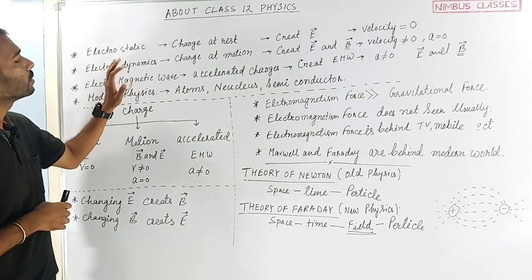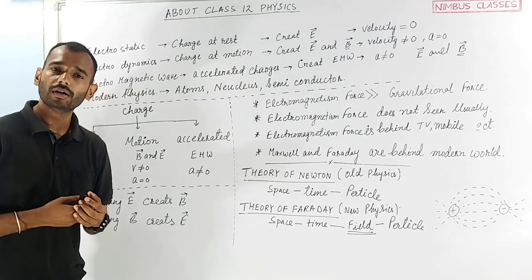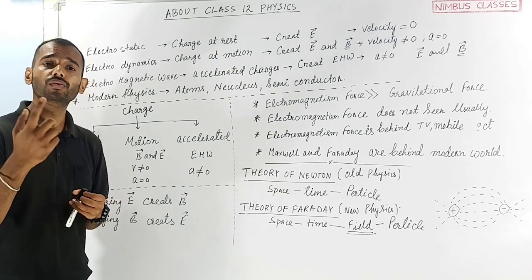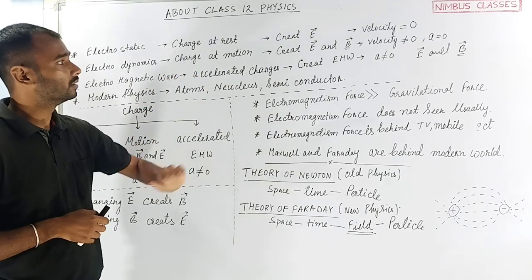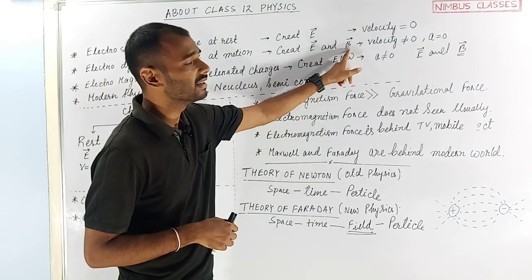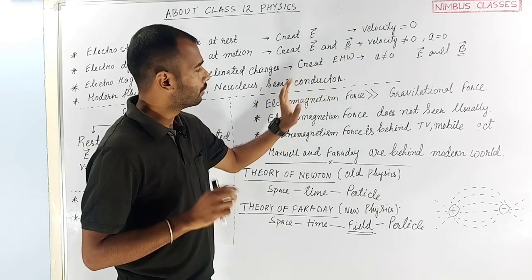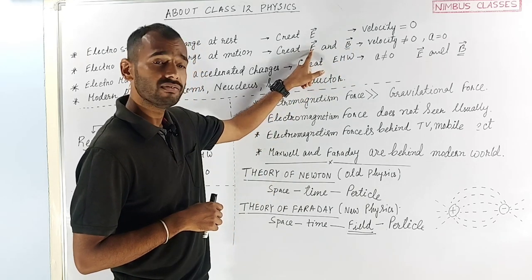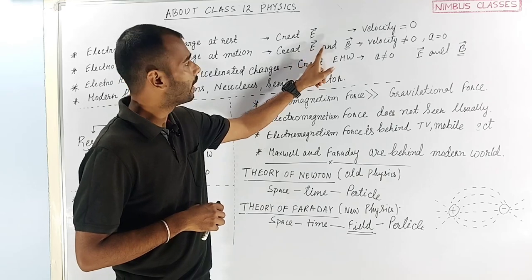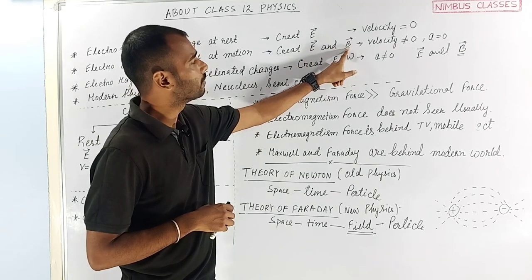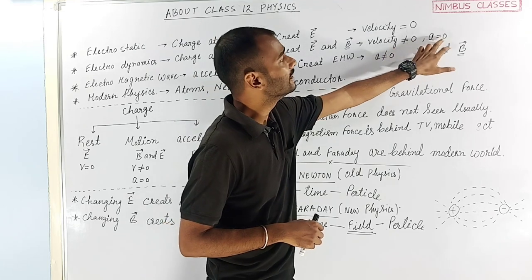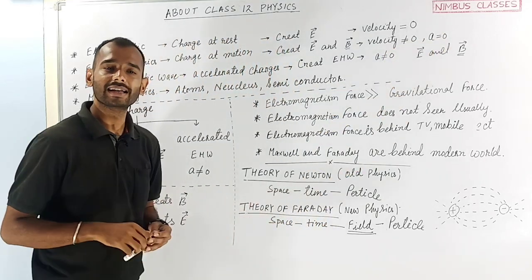Similarly, electrodynamics — this means the charge is in motion. When charge moves, it creates both an electrical field and a magnetic field. This means velocity is not equal to zero, but acceleration is not equal to zero either.